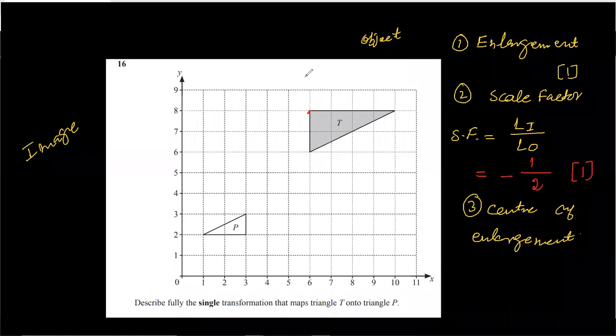To find center of enlargement, the method you have to use is to mark the triangle by naming their points. For example, this point is A, and this point is B, and this point is C.